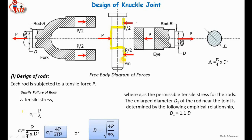Third, a bending failure is also possible. If the pin is loose — having clearance between the eye and fork — then after the application of force, the pin can bend. So I'm going to explain the bending failure step by step. First, let us consider the shear failure of the pin.